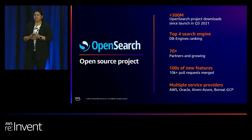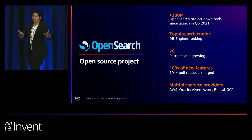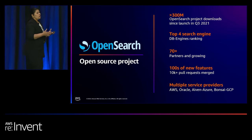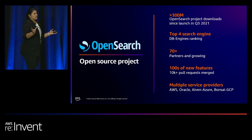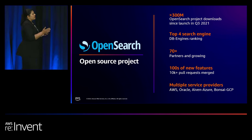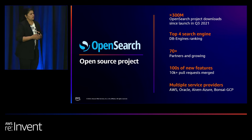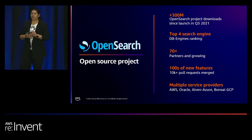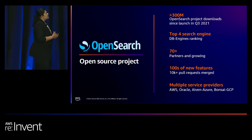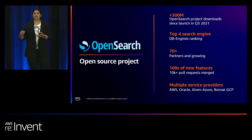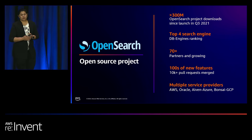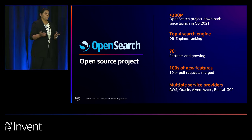OpenSearch is an open source distributed search engine that supports a wide range of use cases — including e-commerce search and full-text search for applications. Because it's a distributed system, it can analyze large amounts of data, and many customers use it for log analytics, application monitoring, and security analytics. Since its inception, we've had over 300 million downloads, and we have over 1,500 folks actively contributing — not all from AWS.